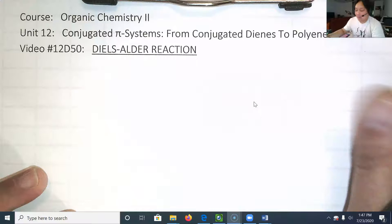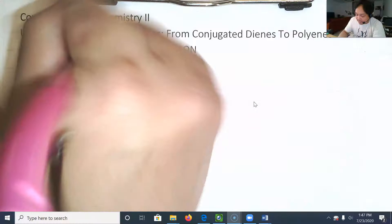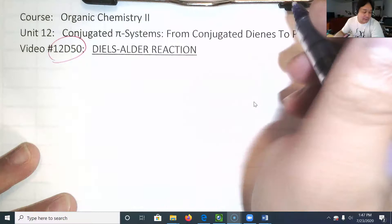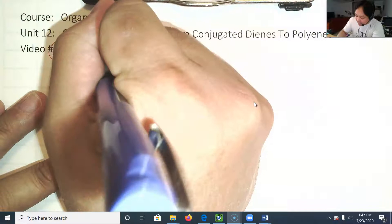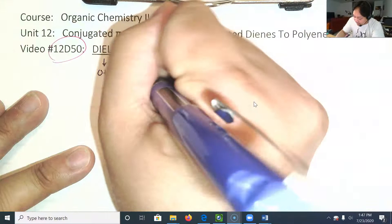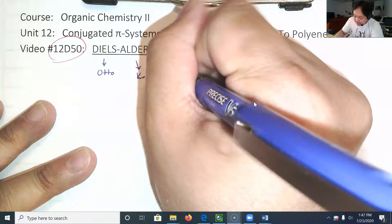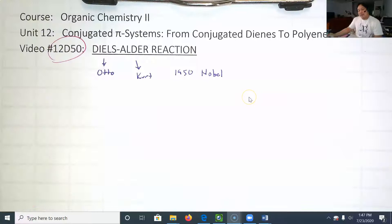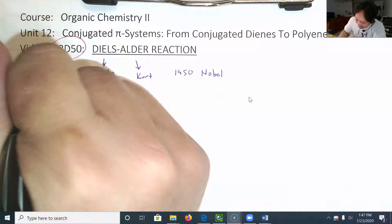Hey everyone, this is the second reaction in the unit on conjugated pi systems: the Diels-Alder reaction. This reaction was developed by Otto Diels and Kurt Alder, who received the Nobel Prize in 1950. It's a weird reaction because you're forming two new sigma bonds and one pi bond, connecting two molecules together in two different places.